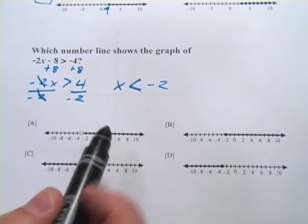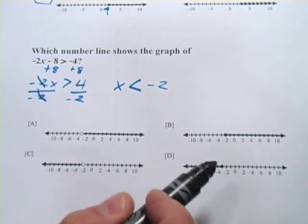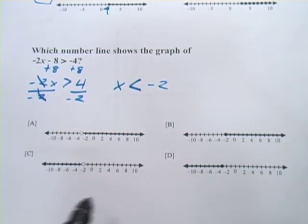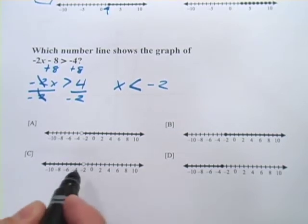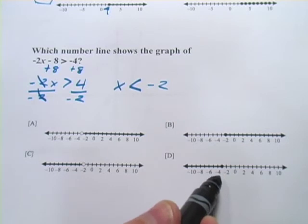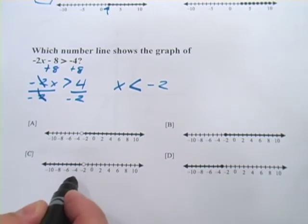We're going to look for something that's going this way, because when they're pointing that way, that's a greater than. So it's got to be either c or d. And it looks like d starts on the negative 3, so that's wrong.